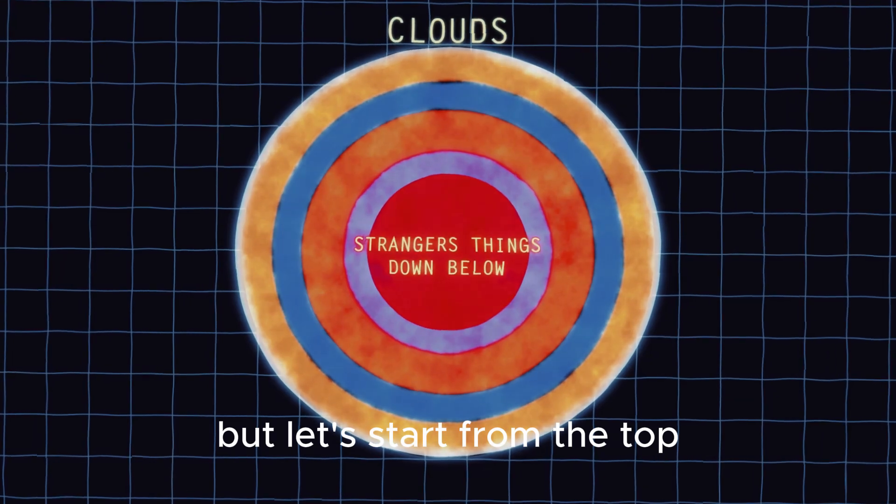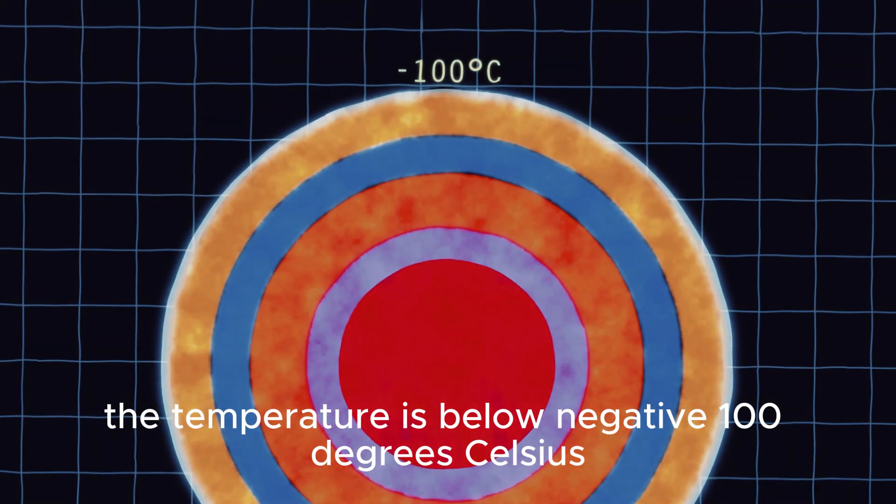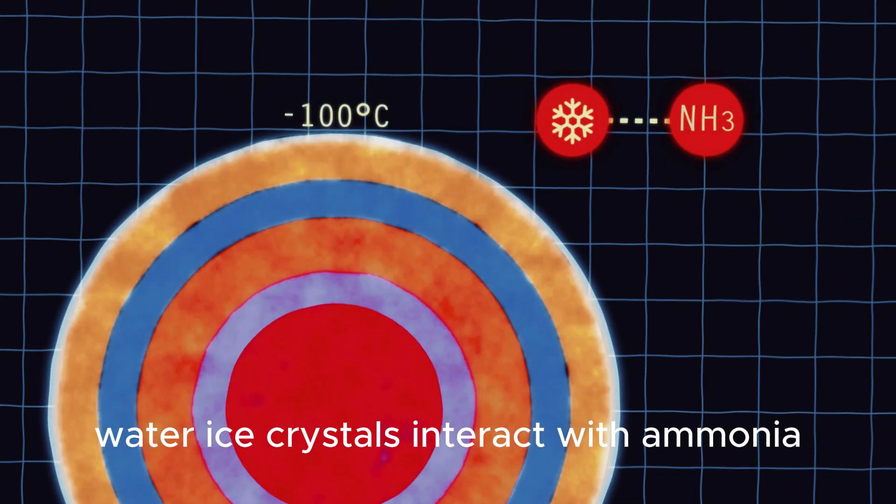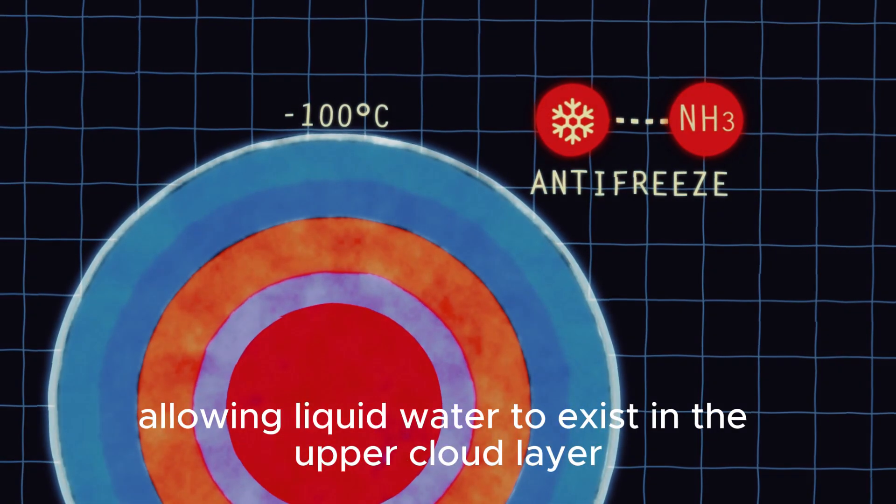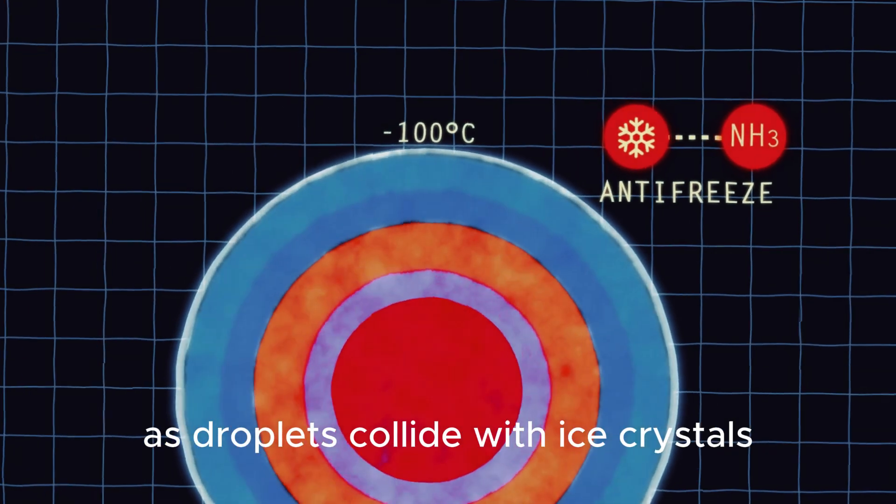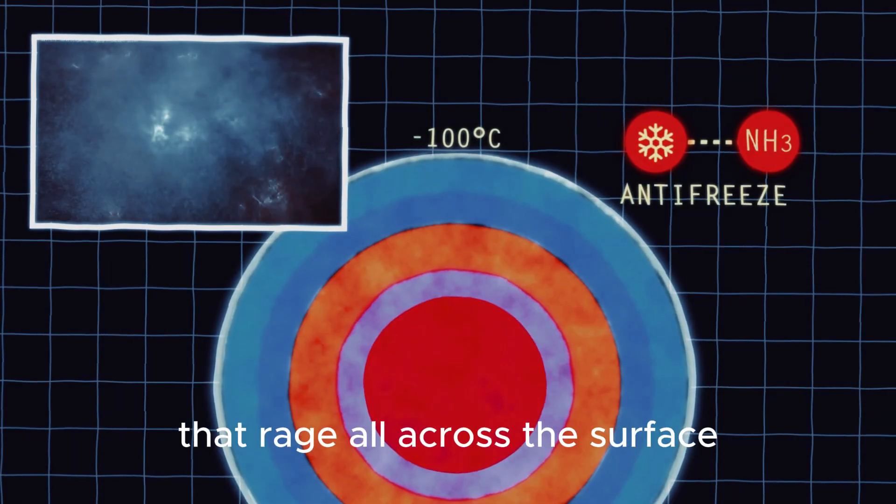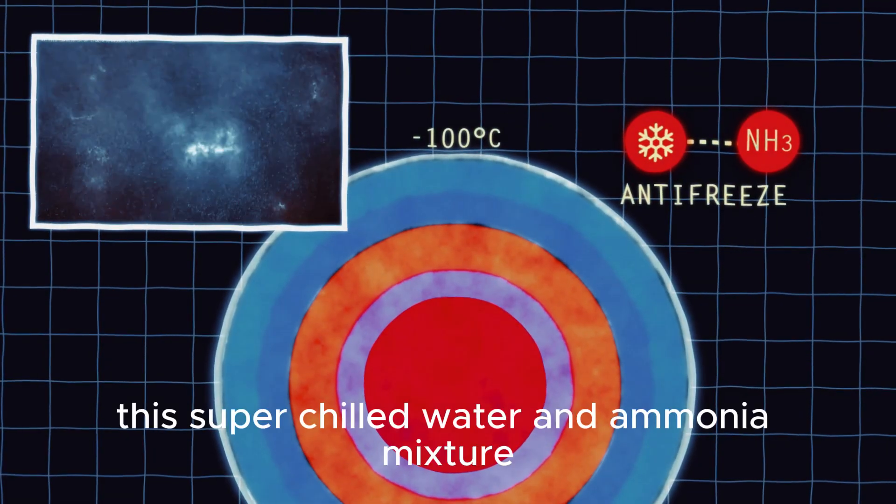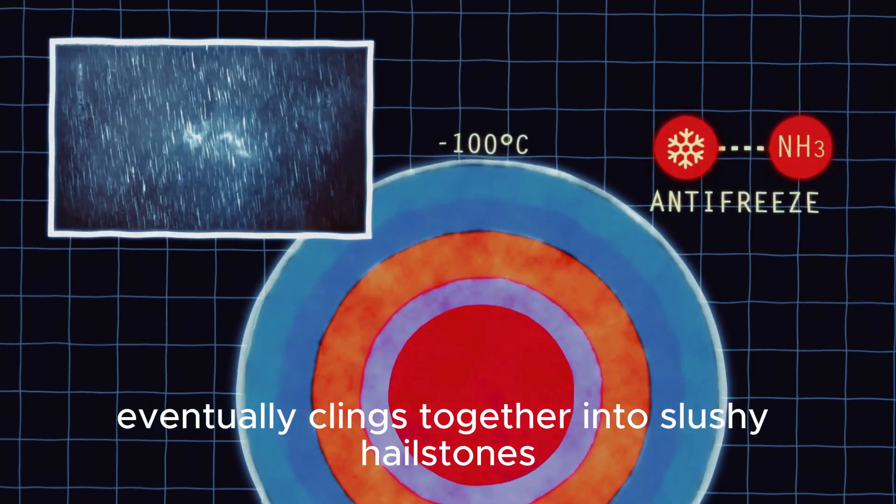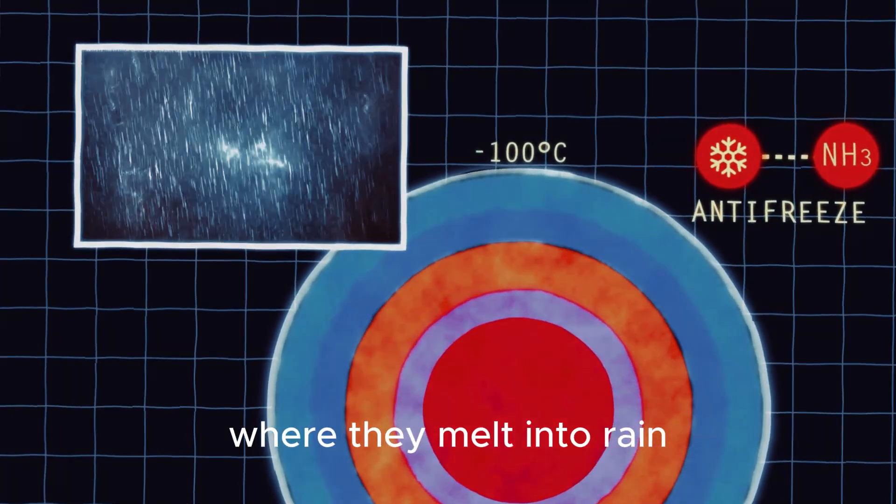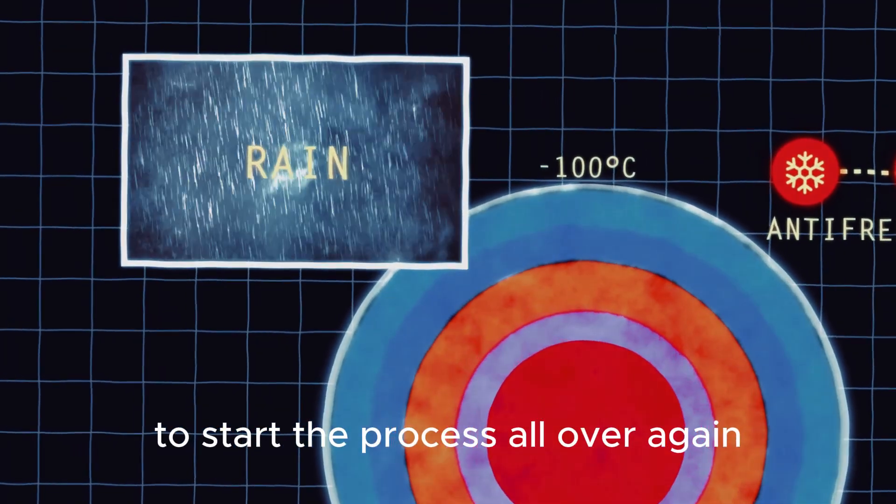Let's start from the top. In the clouds of Jupiter, the temperature is below negative 100 degrees Celsius. Water ice crystals interact with ammonia, which acts as a natural antifreeze, allowing liquid water to exist in the upper cloud layer. As droplets collide with ice crystals, the clouds become electrified and trigger gigantic lightning storms that rage all across the surface. This super chilled water and ammonia mixture eventually clings together into slushy hailstones that fall down into the lower atmosphere, where they melt into rain, evaporate, and then rise back up to start the process all over again.